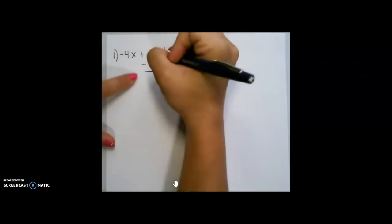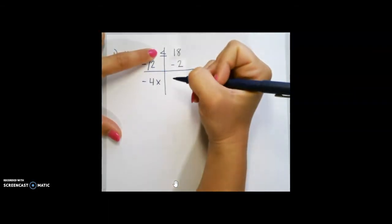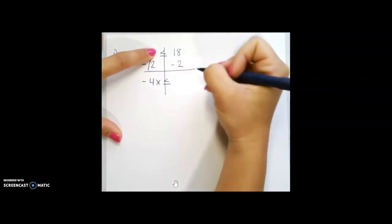2 minus 2 is going to cancel out, which leaves me with negative 4x. Don't forget your symbol, less than or equal to 16.